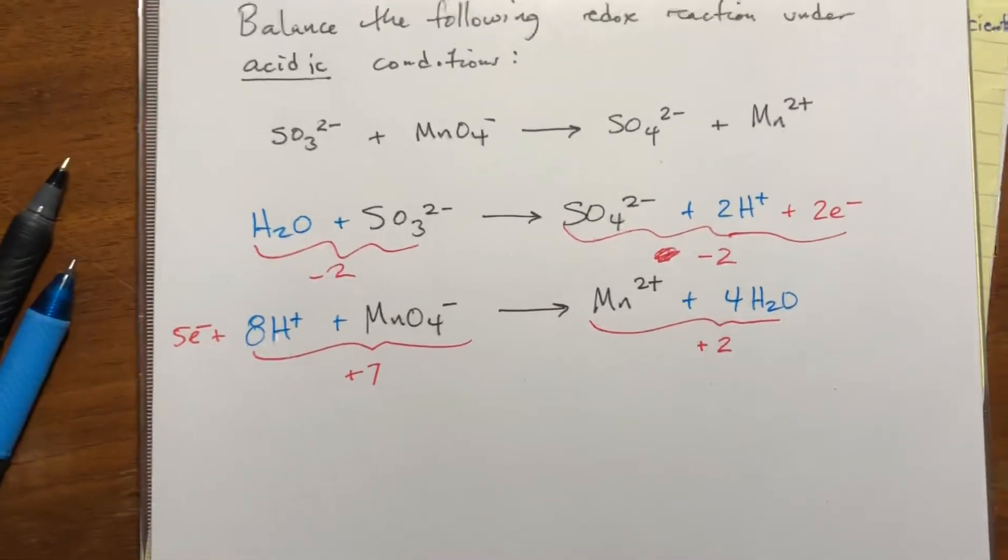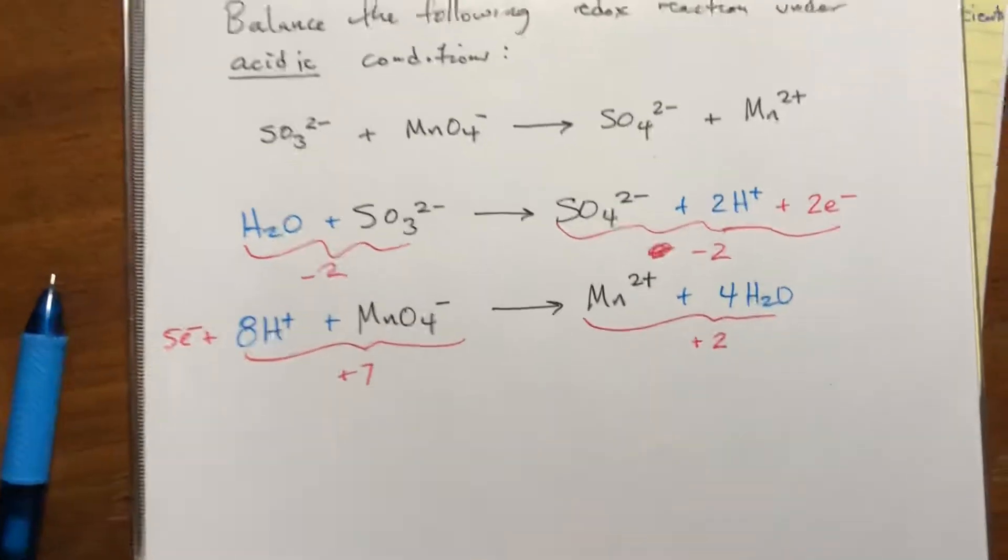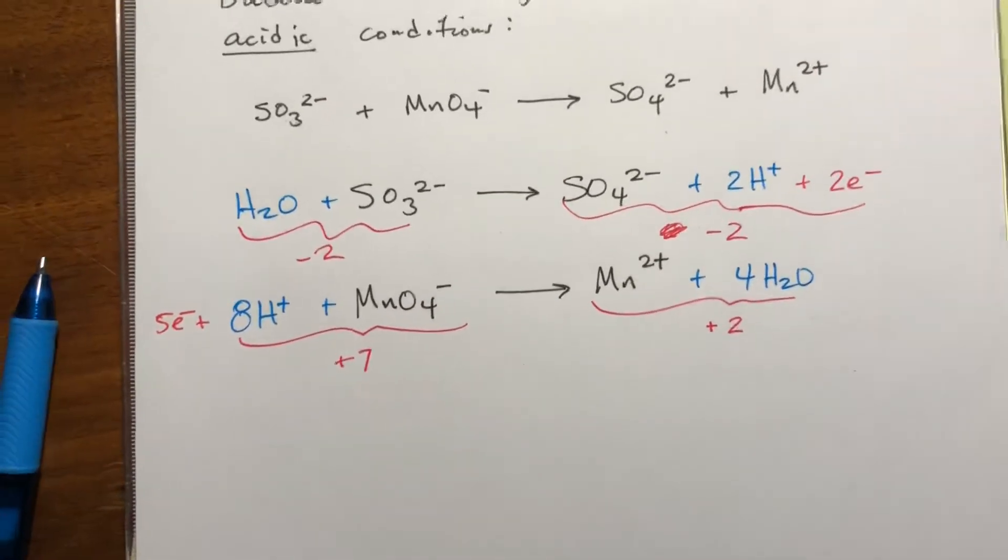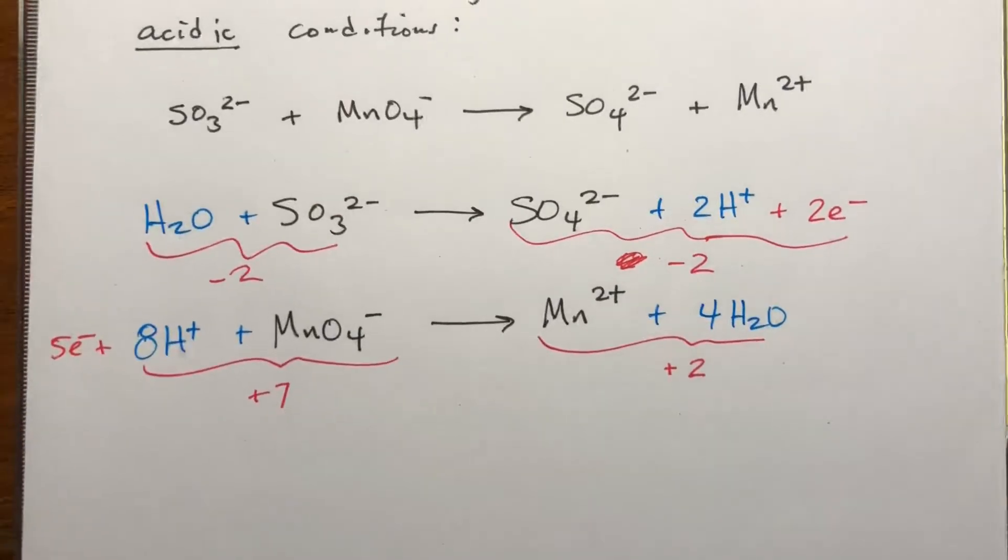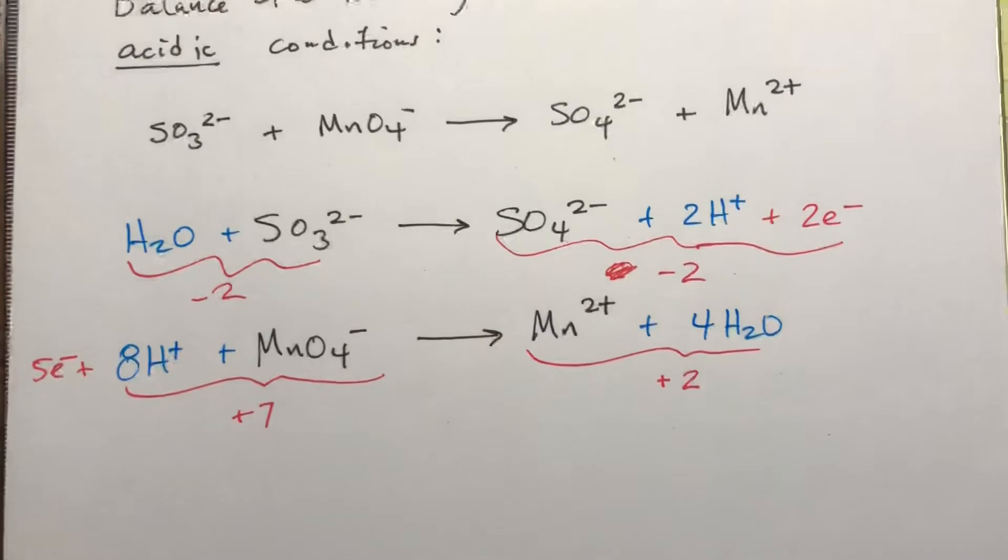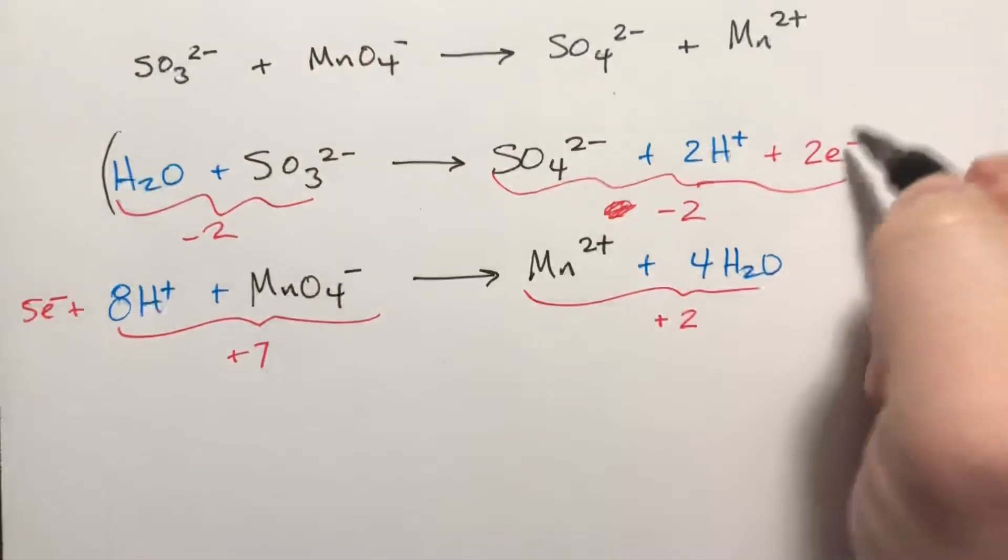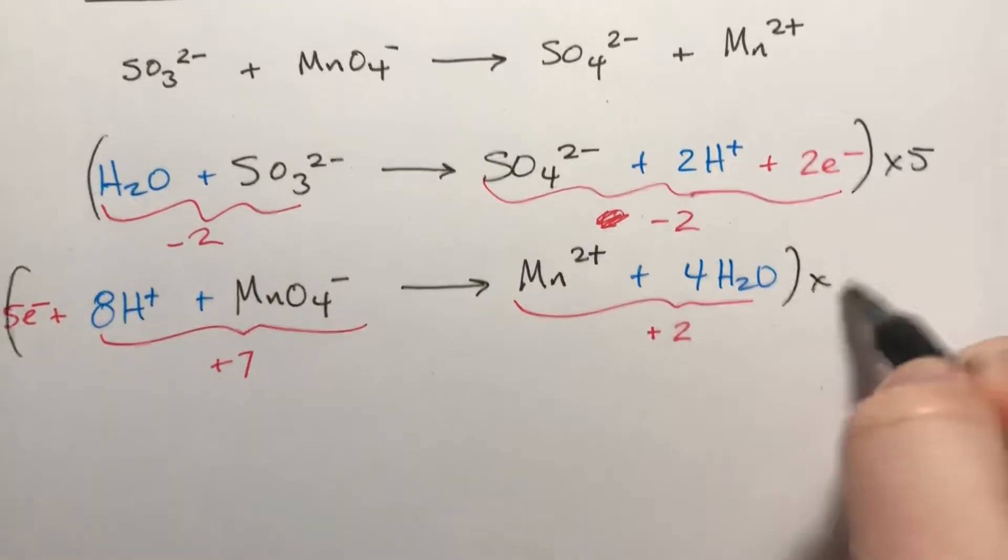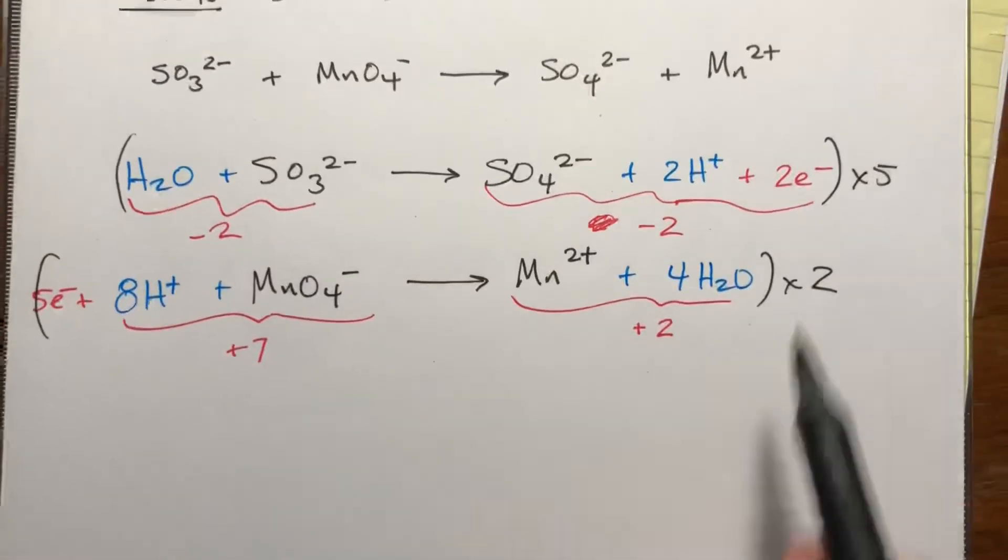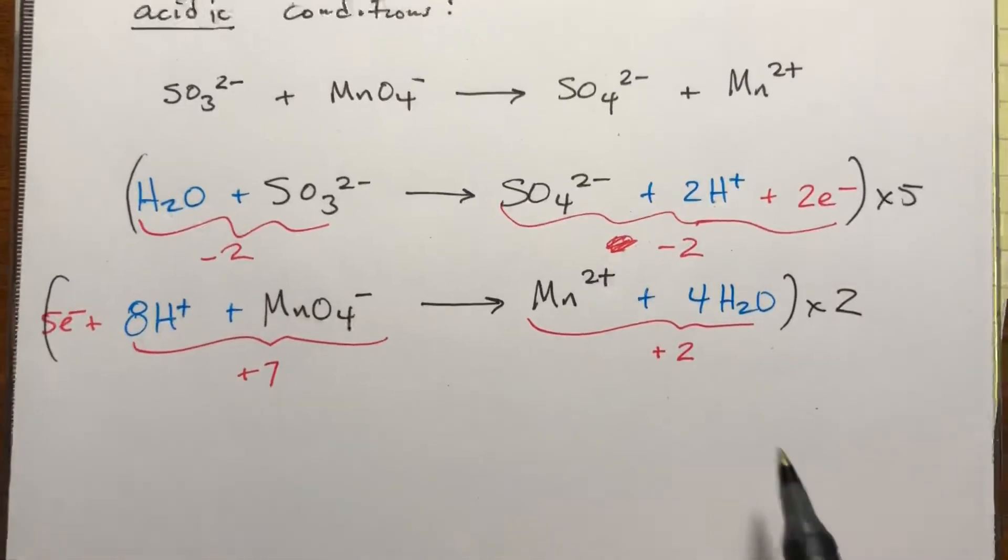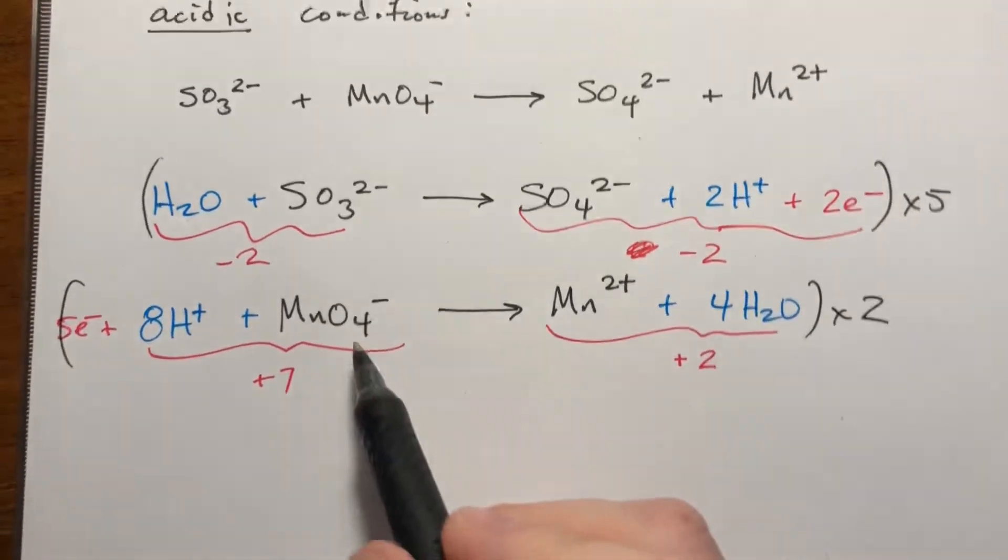Okay, now for the fun bit. To combine these reactions, we need the electrons to cancel out. So we need to find the least common multiple between two and five, which unfortunately is ten. So in order to get the electrons to cancel out, we're gonna have to take the entire top reaction times five, and the entire bottom reaction times two, because that'll give us ten electrons here.